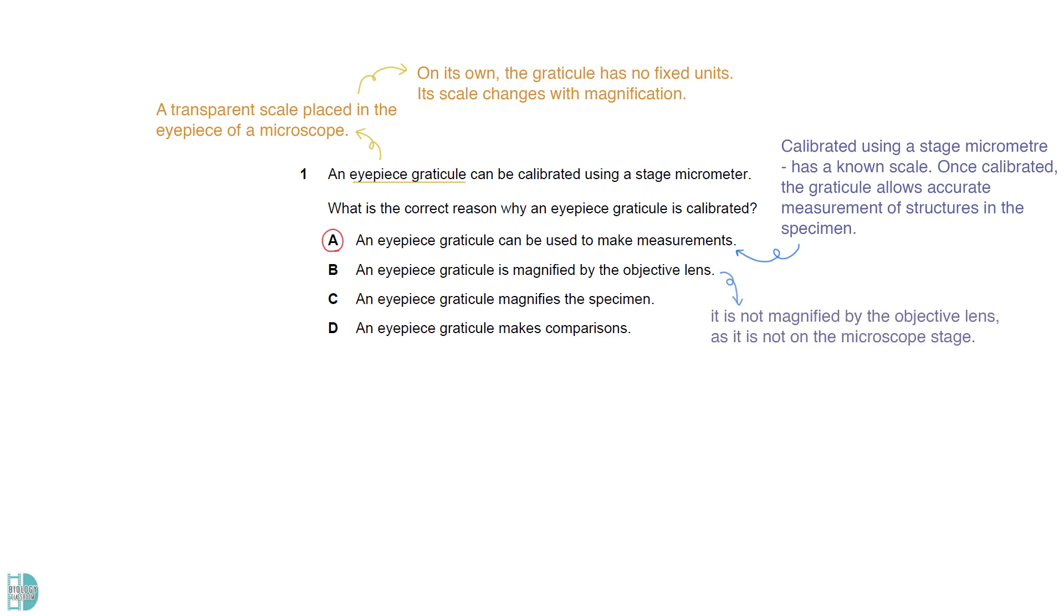B is wrong because it is not magnified by the objective lens as it is not on the microscope stage. C is wrong because the objective and eyepiece lenses do the magnifying, not the eyepiece graticule. D is wrong because we don't have to calibrate it if we only want to make comparisons.